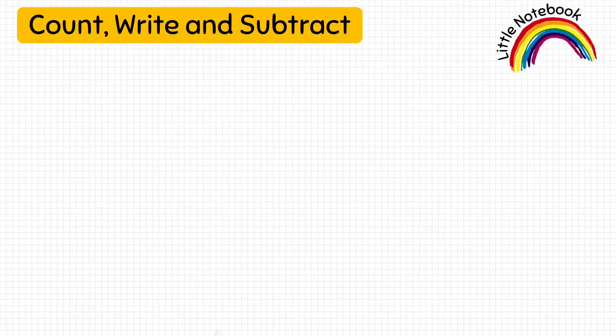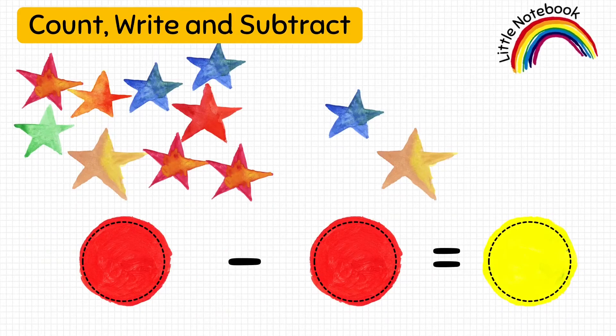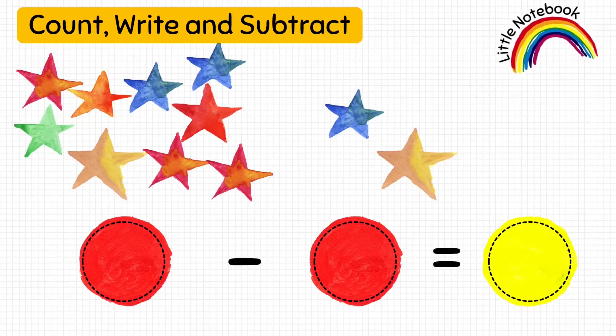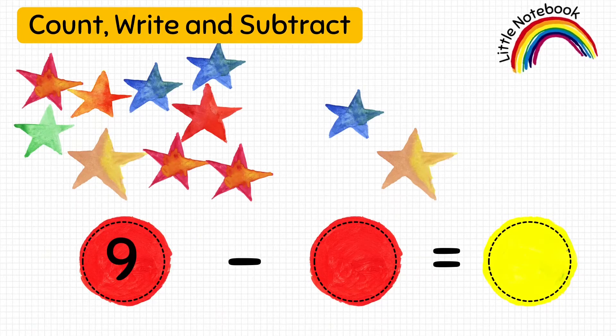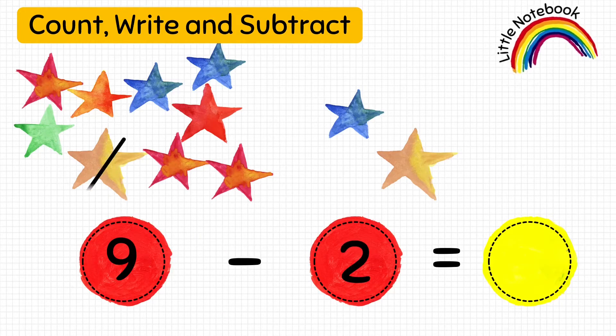Here is one more question for your practice — solve it and you should get the answer: nine minus two equals seven.